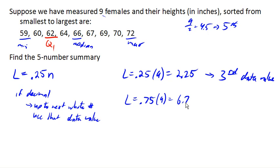If it's decimal, we're going to go up to the next value. And so this would be the seventh data value. And so the seventh data value here is 5, 6, 7, this one. And that's our quartile 3.